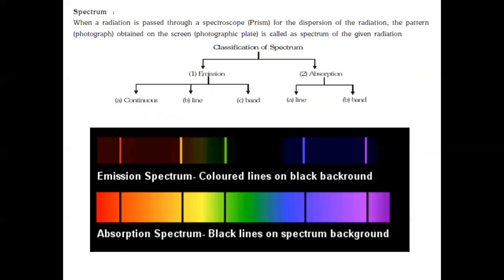Spectrum: when radiation is passed through a spectroscope or prism, the pattern or photograph obtained on the screen is known as spectrum. They are mainly classified into two types: emission spectrum and absorption spectrum. Emission spectrum is further classified into continuous, line, and band emission spectrum. Absorption spectrum is classified into line and band absorption spectrum. Emission spectra show colored lines on a black background, while absorption spectrum shows black lines on a colored background.